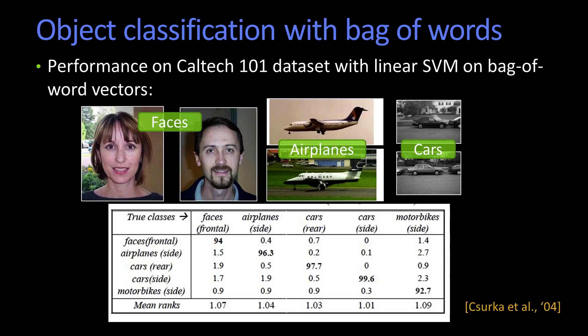That's exactly what was done in work from 2004. There was a database — still is a database — referred to as Caltech 101. It was one of the original datasets with enough images of enough object types to start exploring database access. They trained a linear SVM using bag-of-words vectors across several classes: faces, airplanes, cars, motorbikes, et cetera. The average percentage of time that it was the best rank was 94 to 96%, which is pretty good.